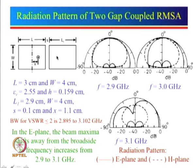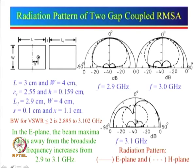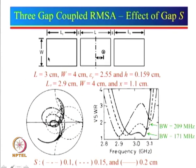We got one solution from VSWR bandwidth, but not a stable radiation pattern. The remedy: if we put another patch on the other side of the fed patch, this patch will try to shift the beam to the right, while the patch on this side will try to shift the beam to the left. So the radiation pattern may remain in the broadside direction. Let us see what happens if we put another patch on the other side. We have now put an identical patch on the left side, and shown curves for three different gaps: 0.1, 0.15, and 0.2 cm.